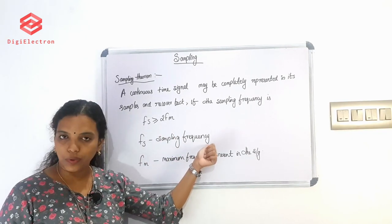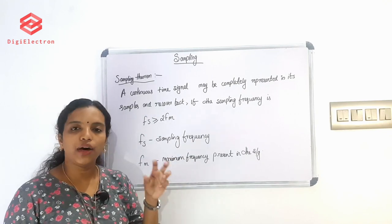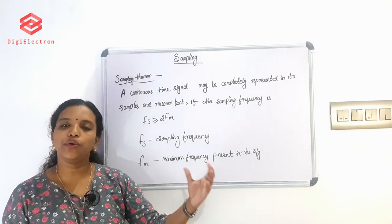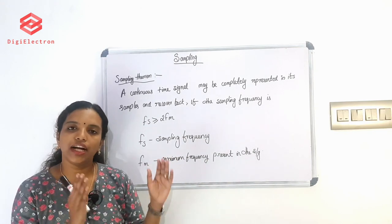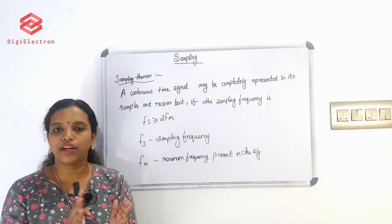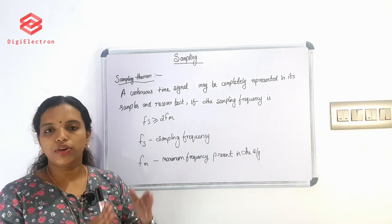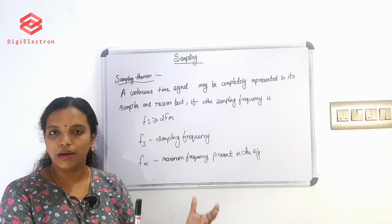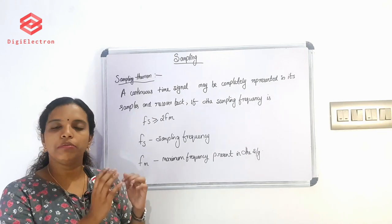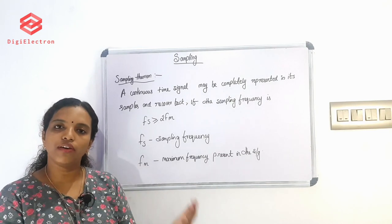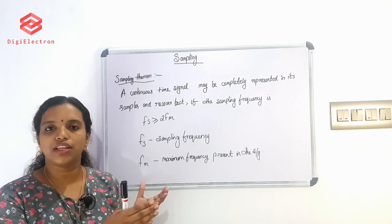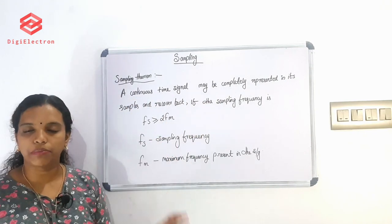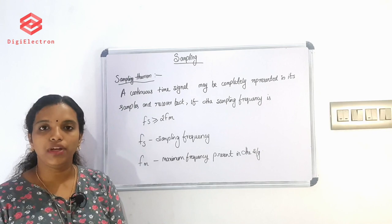Fs is the sampling frequency. Fm is the maximum frequency of the continuous time signal. If we have a continuous signal, we perform sampling. That continuous signal is put into sample form and transmitted. On the receiver side, the continuous time signal samples are received, and if we have those samples, we can recover the original continuous time signal.